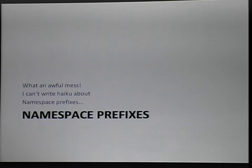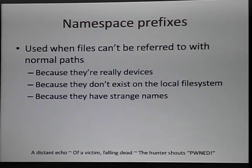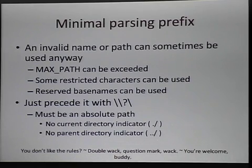The next thing I want to talk about is namespace prefixes — things you can prepend to file paths to sort of change what they're pointing to. You use them because the things you're pointing to are really devices, or they don't exactly exist on the local file system, or because they have names which violate the normal restrictions. You can violate a lot of the restrictions you'd normally encounter when working with files on Windows. You can exceed MAX_PATH, so you can give a path longer than 260 characters. How many people have seen code that uses MAX_PATH as the size for a fixed-size buffer? Well, it's out there a lot. Also, some restricted characters can be used, so you can slip in meta characters that normally wouldn't be in file names.